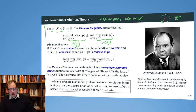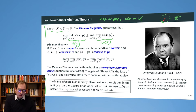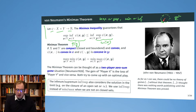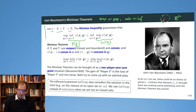Von Neumann discovered that if X and Y are compact — closed and bounded — and also convex, and if in addition psi is convex in x and concave in y, then we have equality: independently of whether we first do the maximization then the minimization, or the other way around, we get to the exact same result. Here we can talk about max and min instead of infimum and supremum, because we are now in closed sets.